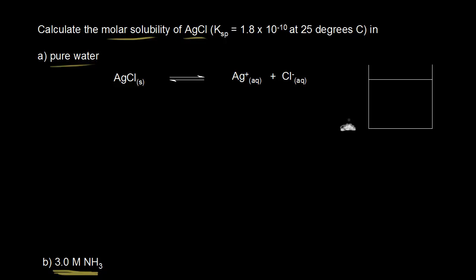So we take some solid silver chloride and we put it in some pure water, and some of the silver chloride is going to dissolve, but most of it's going to stay in the solid form. Silver chloride is only a slightly soluble compound. Some of it does dissolve, and so we get a saturated solution of silver chloride with silver plus one cations and chloride anions in solution, and we have our solubility equilibrium. To find the molar solubility, let's go ahead and write down our ICE table.